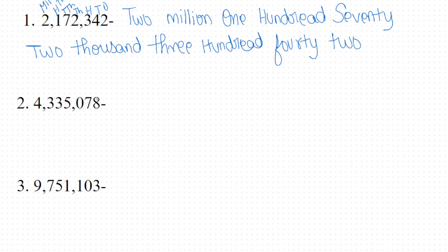For the next number: eight is in the place of ones, seven is in tens, zero is in hundreds — do we include zero? Yes, we include it. Five is in the place of thousands, three is in the place of ten thousands, three is in the place of hundred thousands, and four is in the place of million. So we start with four million.